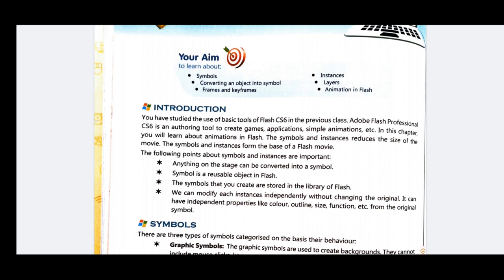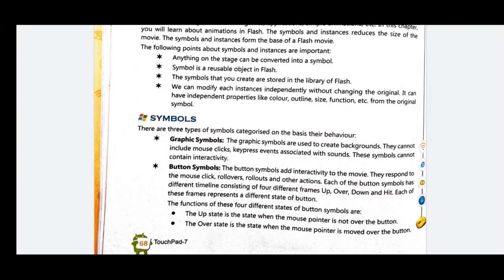Each instance can have independent properties like color, outline, border, size, and function. You can change these properties independently from the original symbol without affecting it.